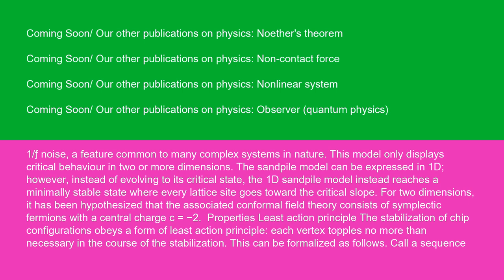This model only displays critical behavior in two or more dimensions. The sandpile model can be expressed in 1D; however, instead of evolving to its critical state, the 1D sandpile model instead reaches a minimally stable state where every lattice site goes toward the critical slope. For two dimensions, it has been hypothesized that the associated conformal field theory consists of symplectic fermions with a central charge c = −2.